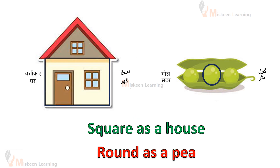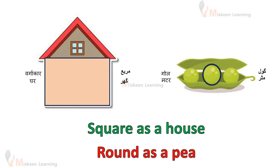Square as a house — eek ghar ki tira, square shape. Round as a pea — eek matar ki dhani ki tira, gol. Yahaan per hum kis cheese ka comparison kerrehe hai? Shape ka — we are comparing shape here.